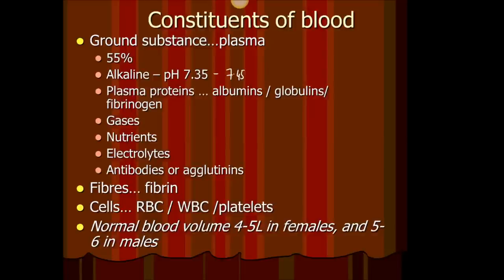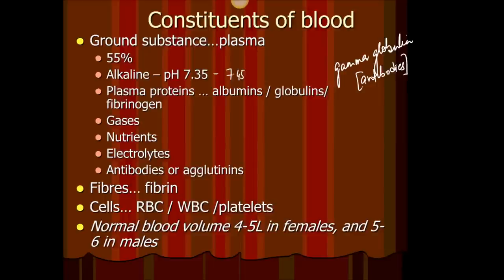Plasma contains large proteins. There are globulins, also known as gamma globulins — some of these you know as antibodies. When you get a vaccine, your body begins to produce antibodies, and antibodies are gamma globulins. There is also fibrinogen, which is used for clotting. Fibrinogen is one of the largest proteins you see in blood.